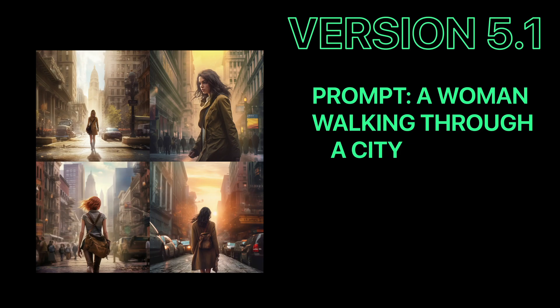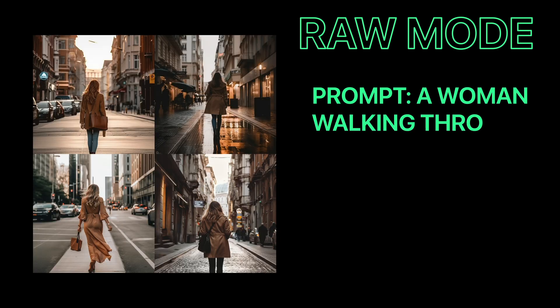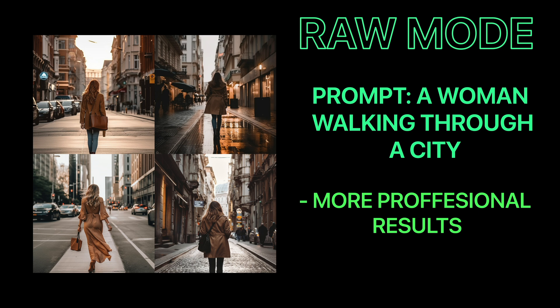Adding 'ultra HD' to the prompt gives much more detailed images while keeping the artistic feel of version 5.1. In raw mode, the images start looking like Instagram photos — as if a photographer planned the shot — while regular 5.1 captures a moment and holds more of a message. Raw mode does a very good job with stock photography and even product photos.